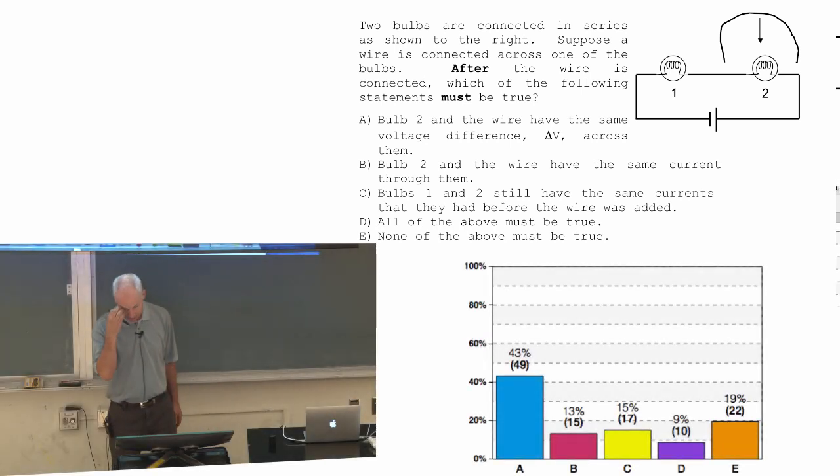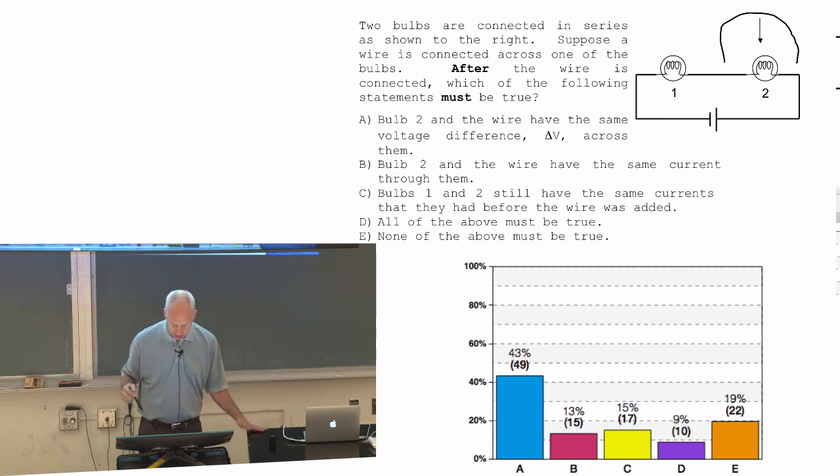So a lot of answers. Almost half of you said A, bulb 2 and the wire have the same voltage difference across them.